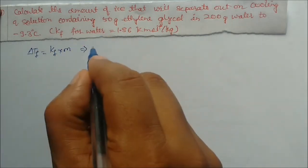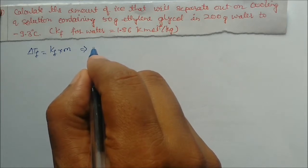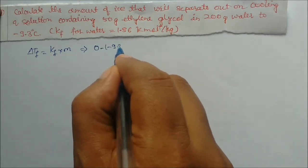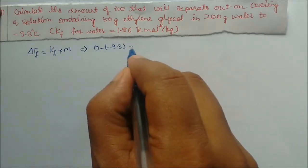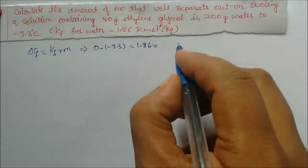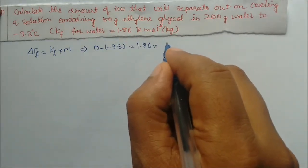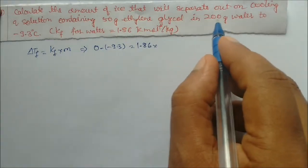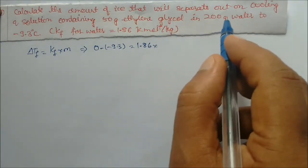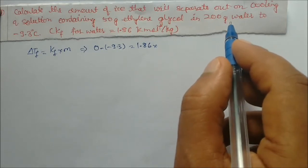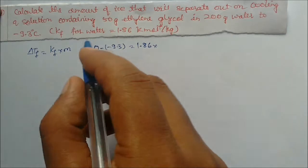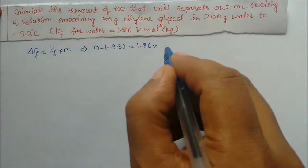Delta Tf = 0°C minus (−9.3°C) = 9.3°C. Kf is 1.86. For molality, we cannot take the full 200 grams of water, because some of the water will be converted into ice. We have to take only that part of water which does not freeze due to the presence of ethylene glycol.